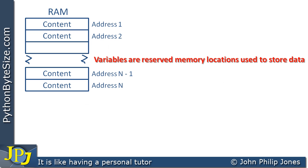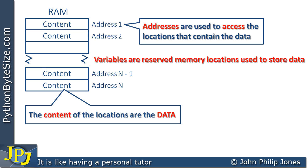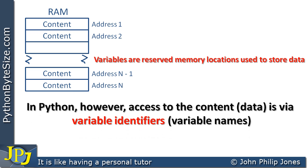Variables are really reserved memory locations used to store data. Random access memory is just a number of contiguous memory locations that have content and addresses. The content of those locations is the data, so all the data the program manipulates are stored in memory locations. Each individual memory location has an address, and addresses are used to access the locations that contain the data. In Python, however, access to the content — the data — is via variable identifiers, in other words variable names. As high-level language programmers using Python, we don't have to worry about the address of the variables; we use a name instead, hiding the details of the underlying hardware.